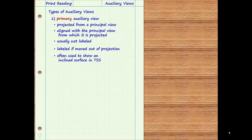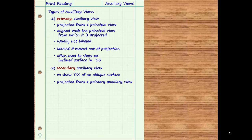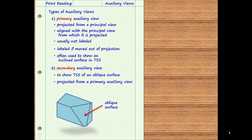Another type of auxiliary view is called a secondary auxiliary view. It is used to show an oblique surface in true size and shape, and is projected from a primary auxiliary view. Here is an object that includes an oblique surface. Since this surface is not parallel to any of the principal viewing planes, it will not show true size and shape in any of the six principal views. Furthermore, since the surface is not perpendicular to any of the viewing planes, it will also not be seen as a line in any of the principal views.